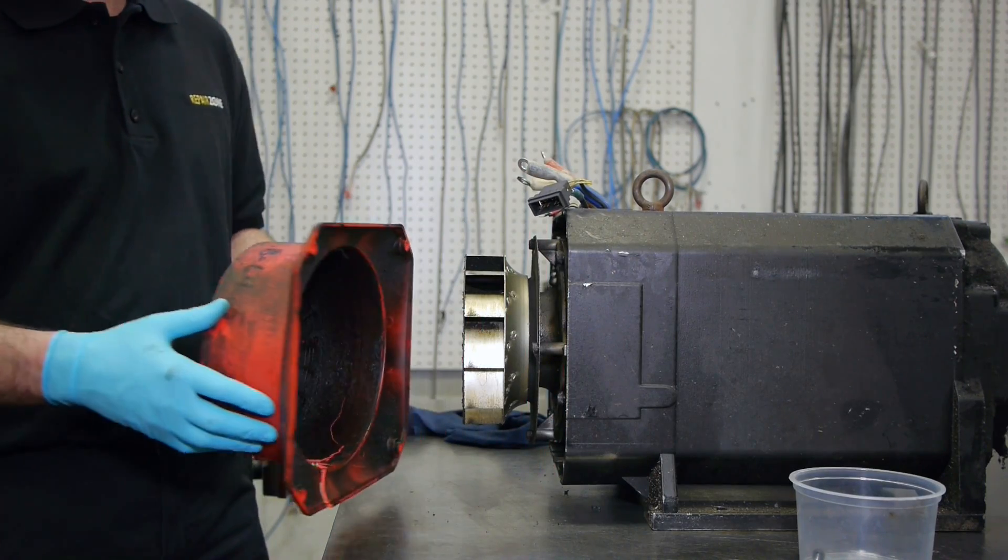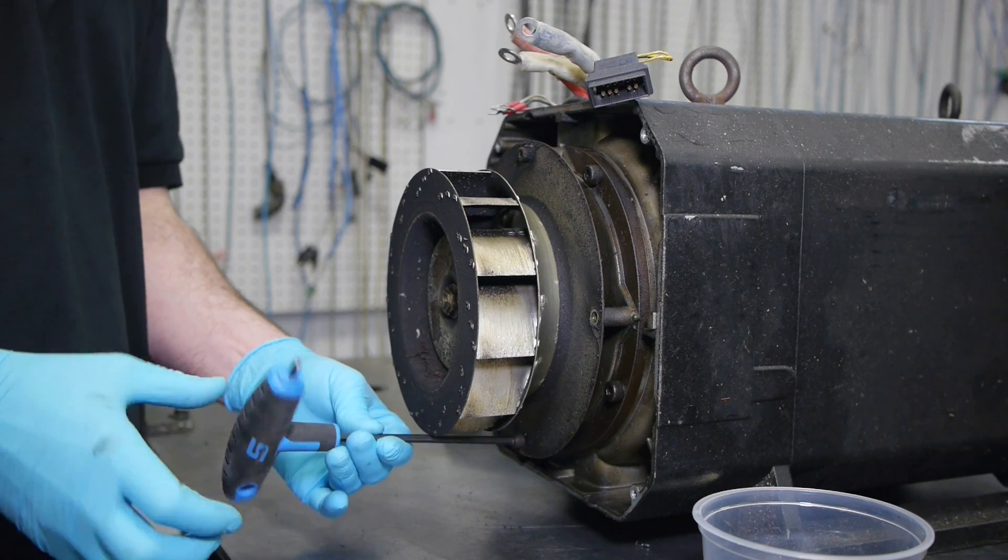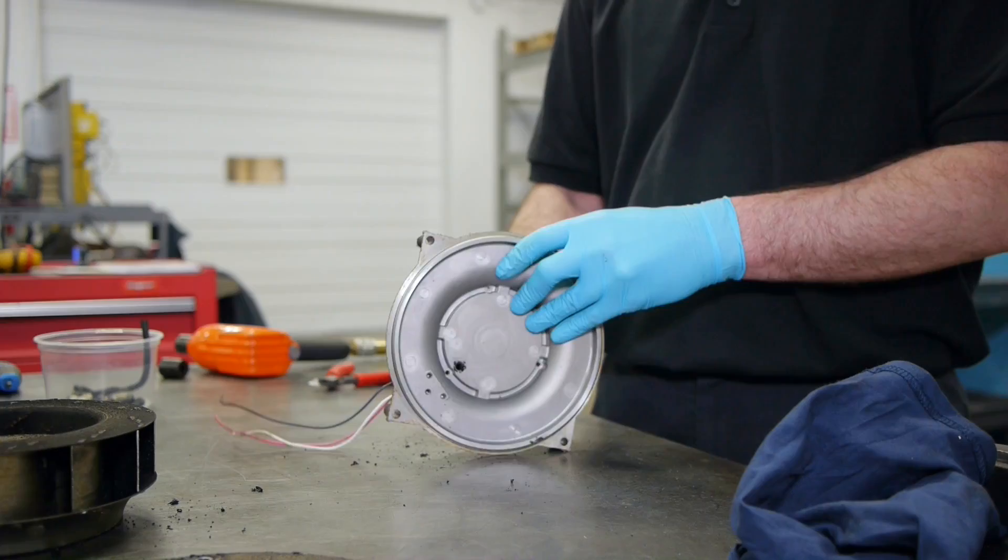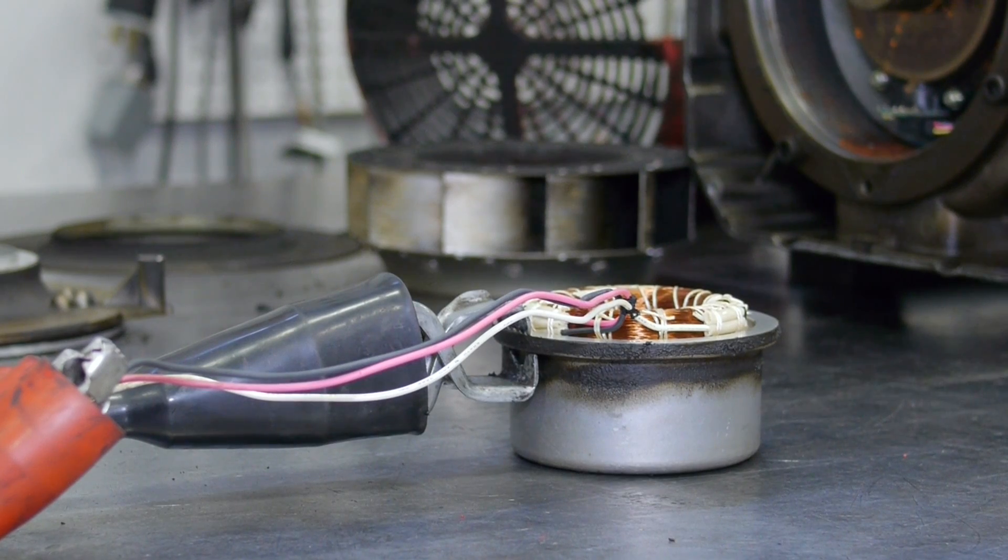During disassembly, we find a cracked fan cover that needs replacement. The fan assembly is then taken apart. The fan motor is surge tested to check the strength of the insulation.